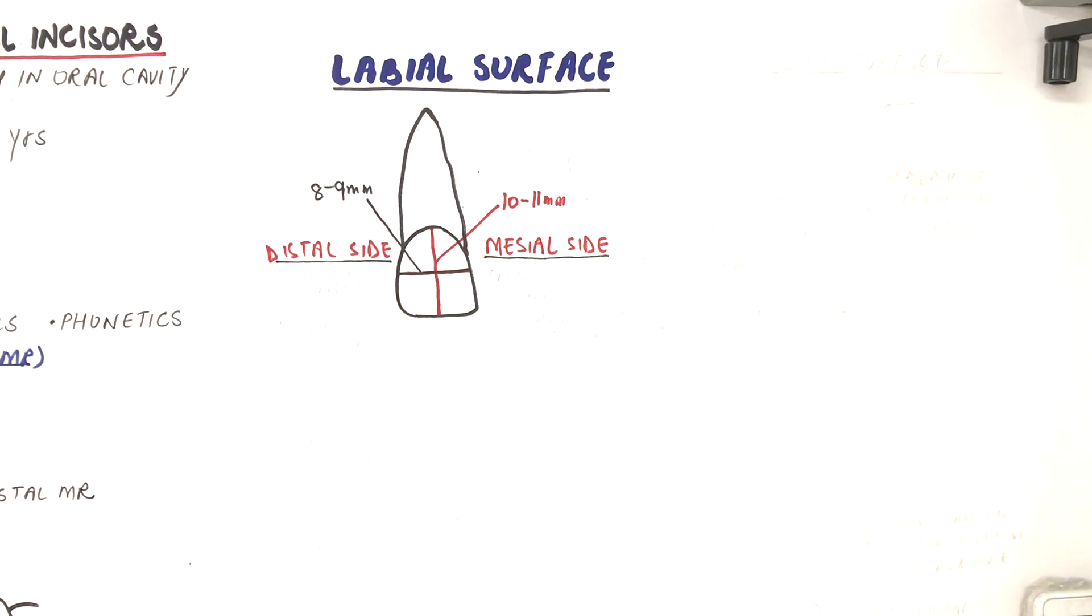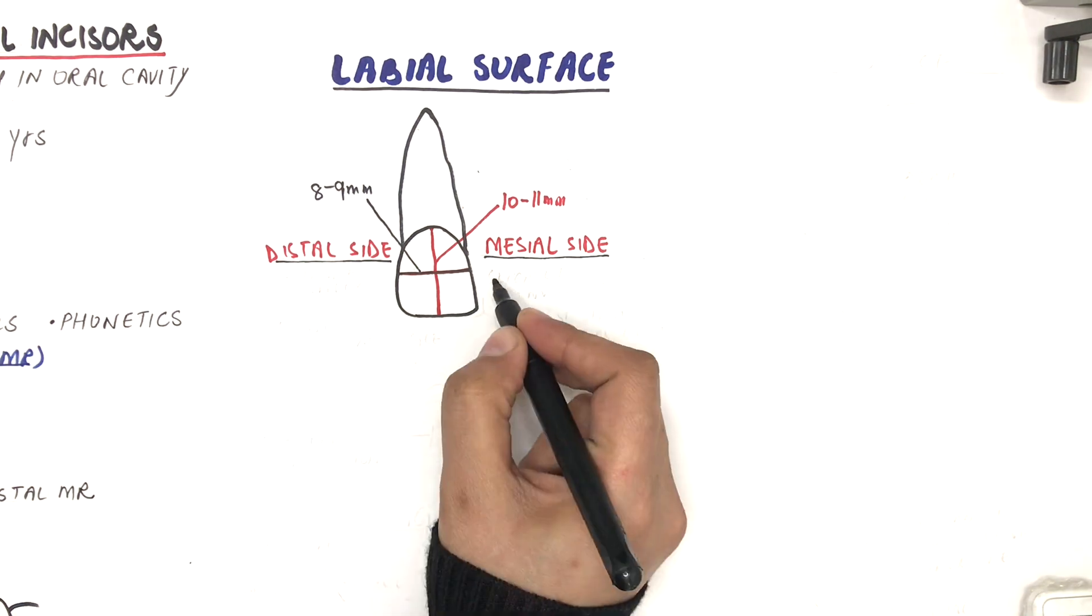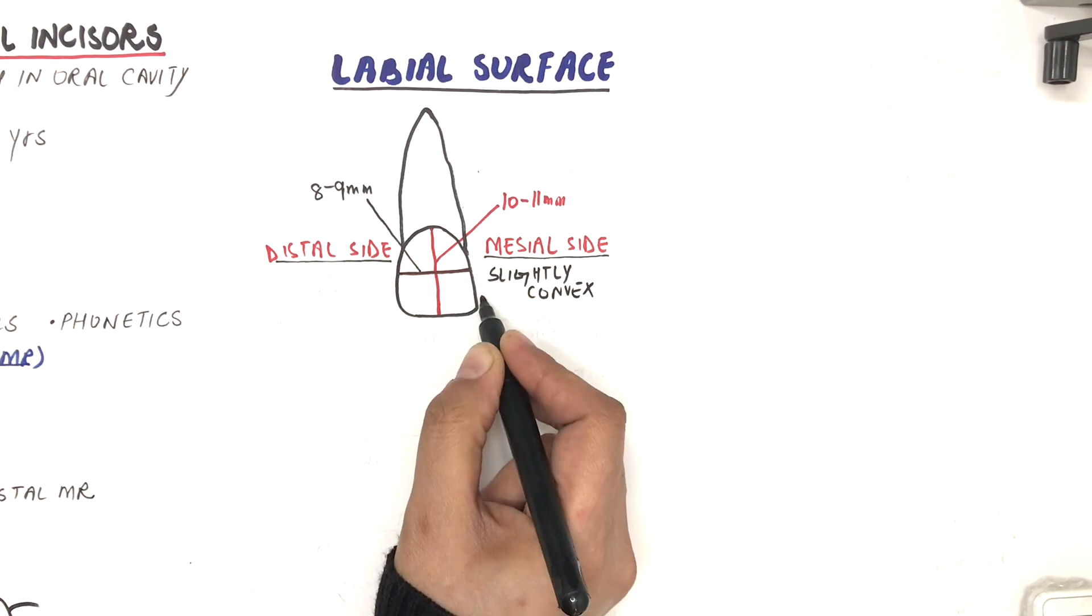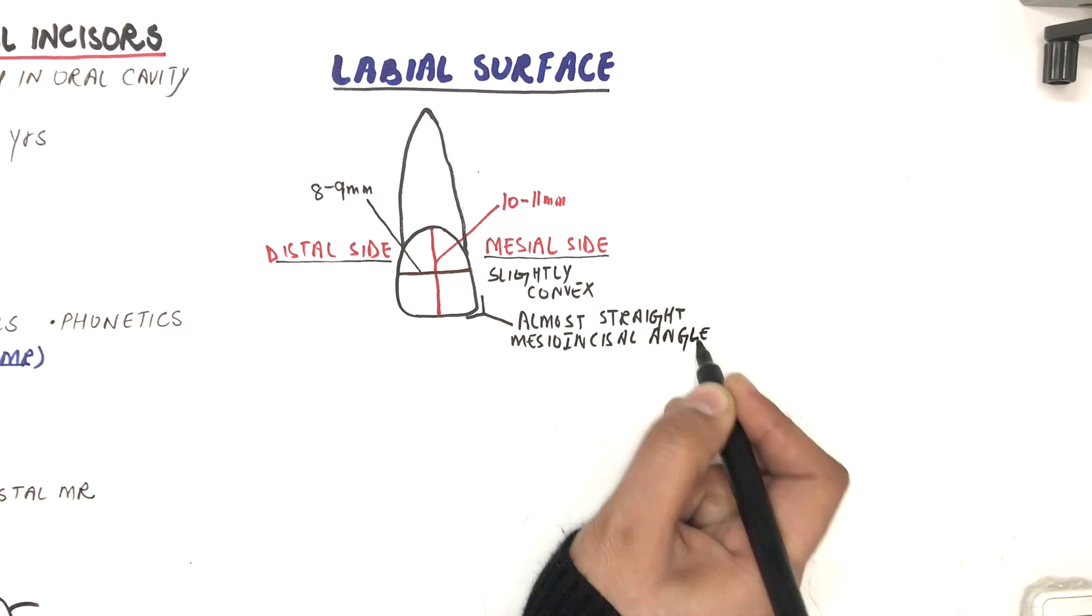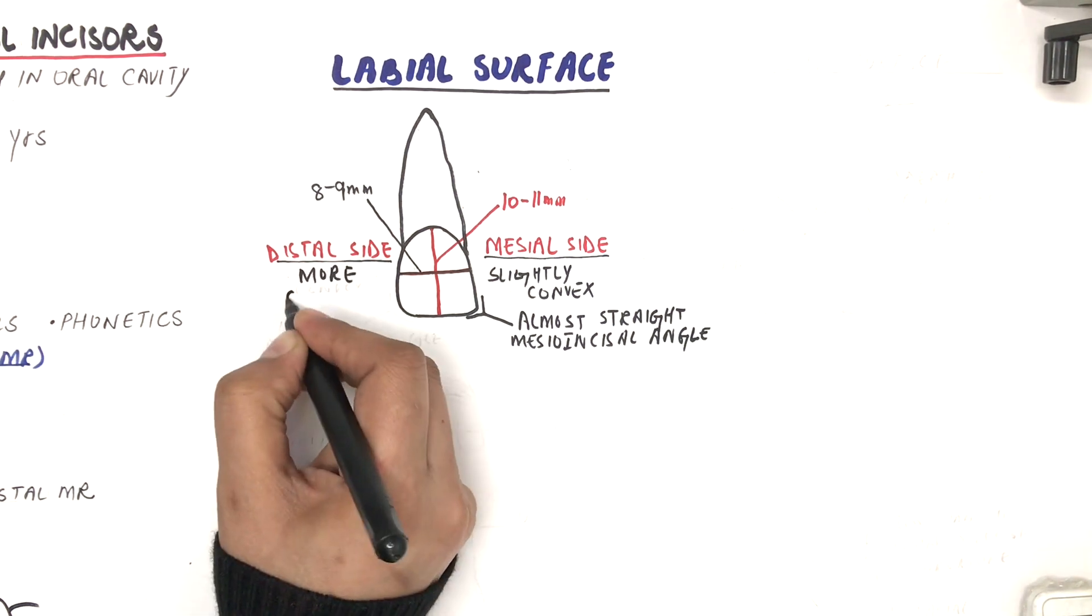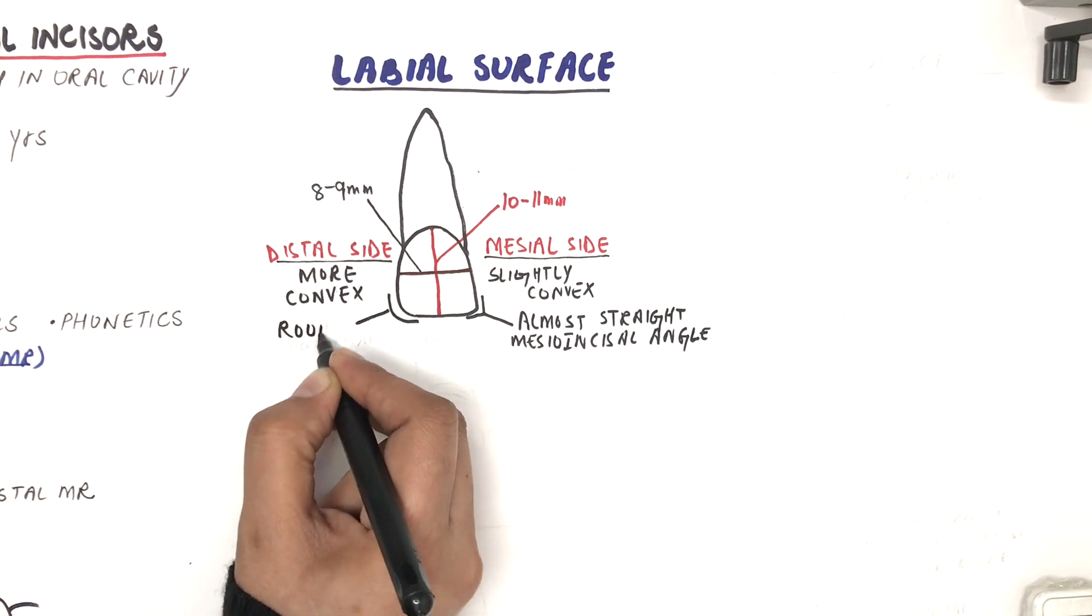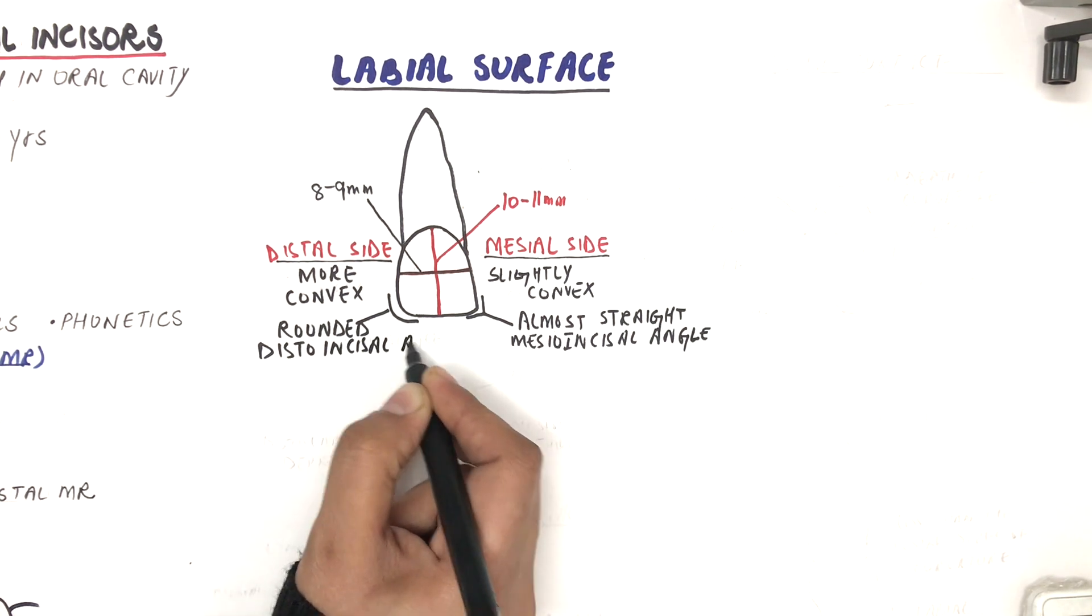The mesial outline of the crown from the labial view is slightly convex and possesses an almost straight mesioincisal angle. However, the distal outline is more convex than the mesial outline with a rounded distoincisal angle.